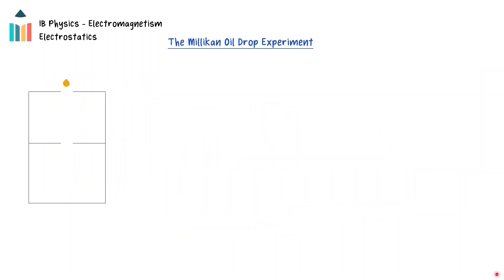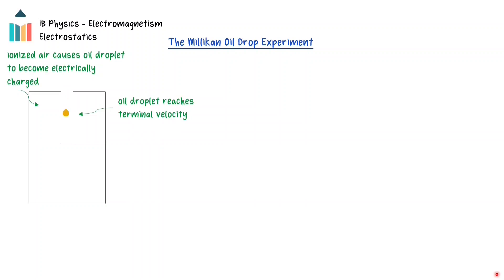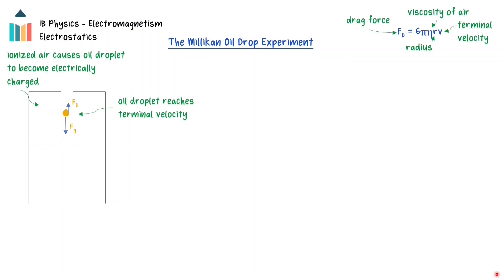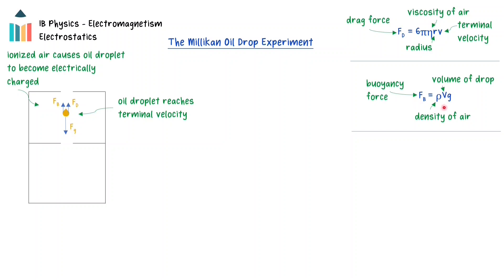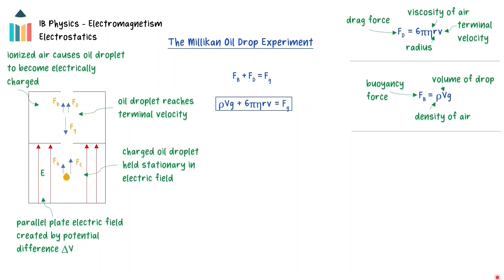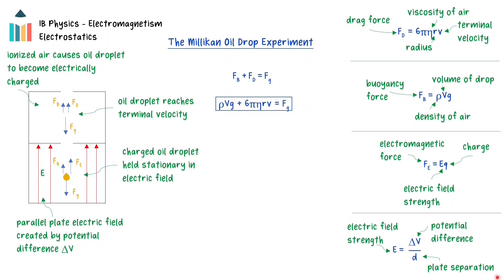The Millikan oil drop experiment, performed by Robert Millikan and Harry Fletcher in 1909, is credited with determining experimentally the value of the elementary charge. In the experiment, oil droplets are first charged electrically by falling through ionized air. Then the terminal velocity of the oil droplet is measured. Terminal velocity occurs when the droplet's downward force of gravity equals the upward drag and buoyancy forces. The drag force equals 6 pi times the viscosity of the air times the radius of the oil droplet times the terminal velocity. The buoyancy force equals the density of the air times the volume of the oil droplet times the gravitational field strength g. The buoyancy force is very small compared to the force of gravity. By equating these forces, the force of gravity acting on the oil droplet can be found.